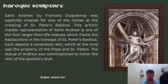The second baroque sculpture example is Saint Andrew by François Duquesnoy, explicitly created for one of the niches at the crossing of Saint Peter's Basilica. This marble representation of Saint Andrew is one of four larger-than-life statues framing the baldachin in the transept of Saint Peter's Basilica. Each depicts a venerated relic which at the time was the property of the Pope. The statue of Andrew was commissioned to honor the relic of the apostle's skull.